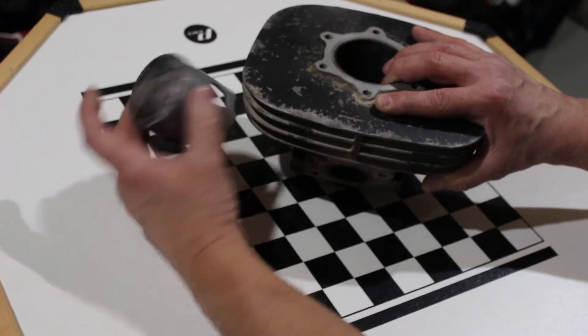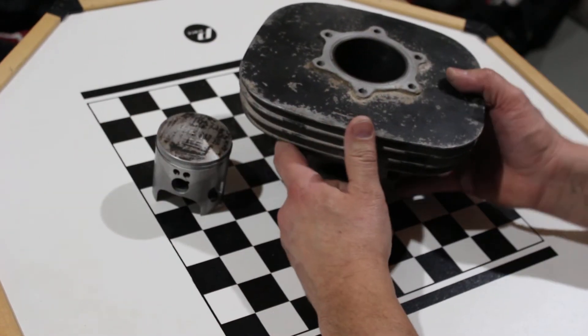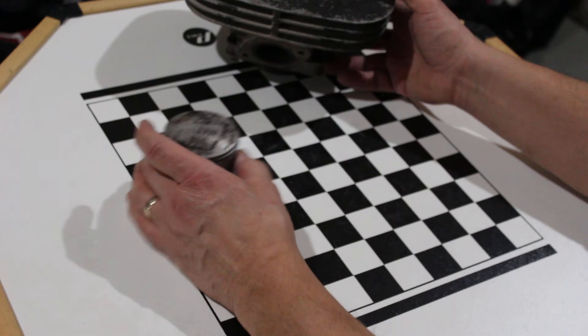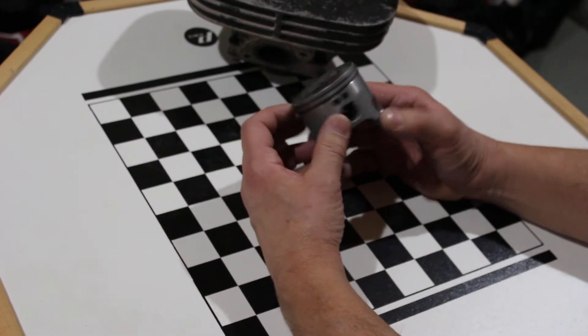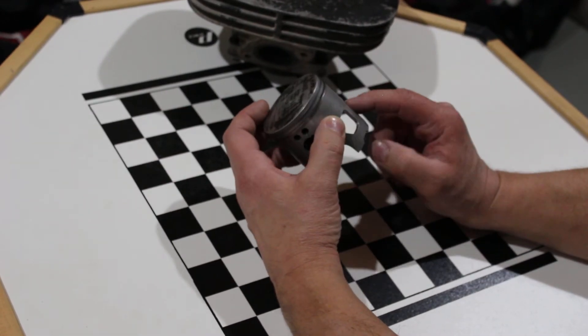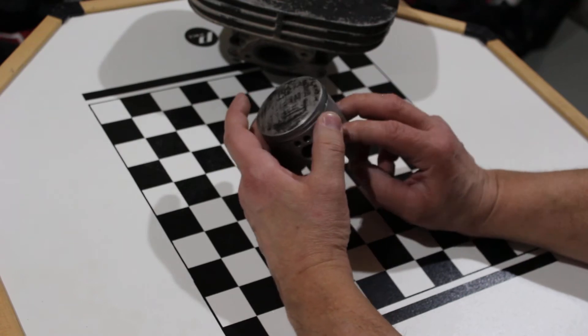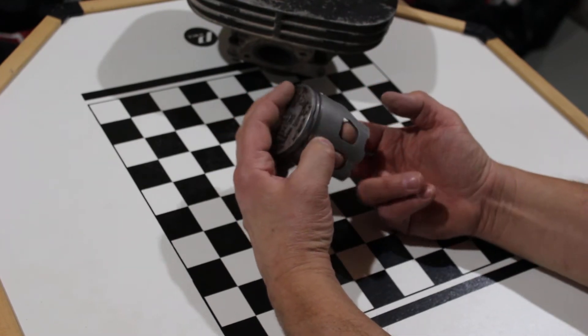This thing came as a unit, so did the piston. Okay, look at the piston first real quick. Interesting thing about this piston is that it actually has holes in the skirt on one side.